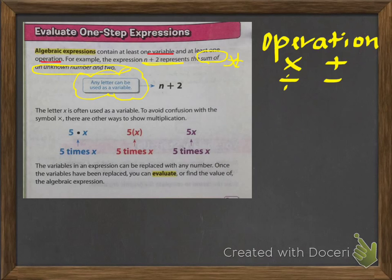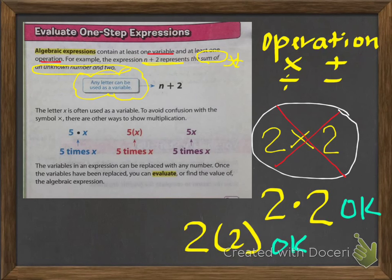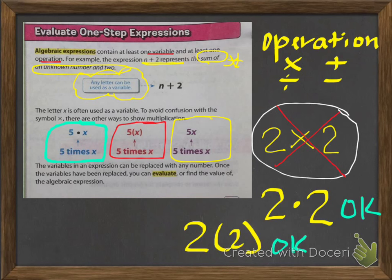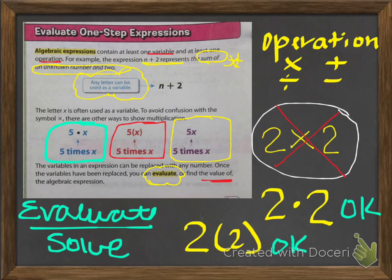No longer do you want to use 2×2 to show multiplication. You want to now use 2·2 or 2(2). The examples they have are: 5·X means 5 times X; 5(X) also means 5 times X; and 5X means 5 times X. The variables in an expression can be replaced with any number. Once the variable has been replaced, you can evaluate, or find the value of, an algebraic expression — so 'evaluate' means to solve or find the value of.